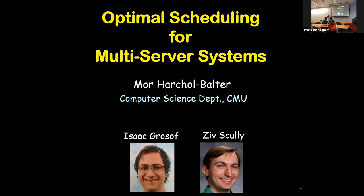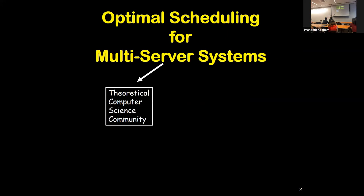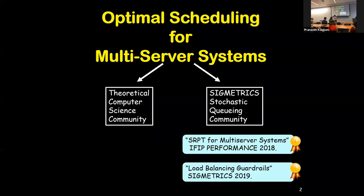We're going to be talking about optimal scheduling for multi-server systems. This comes up in many communities — it's very popular in the theoretical computer science community, which you're all part of, but it's also popular in my community, the stochastic queuing community. I'm going to talk about both communities. Within the stochastics community, I'm going to talk about two papers that we wrote recently, both dealing with multi-server systems and how to optimize scheduling. Both of them won awards.